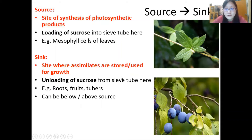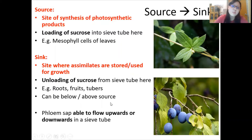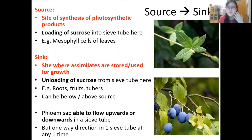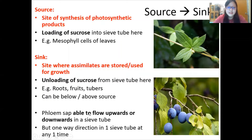The sink could be above or below the source, which means that phloem sap can flow upwards or downwards in the sieve tube — of course, one way in one sieve tube at any time. So if there is both up and down flow, you will need two sieve tubes. Unlike water, whose transport is always upwards against gravity in xylem vessels, with assimilates, because of the location of the sink, the phloem sap can flow upwards or downwards.